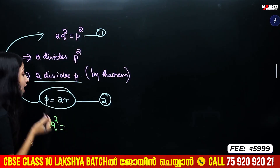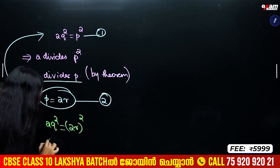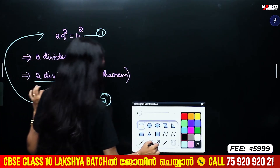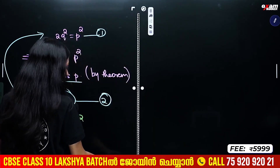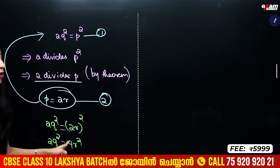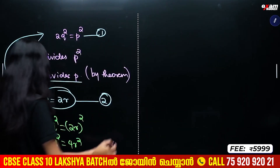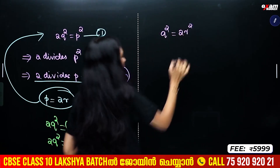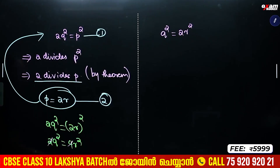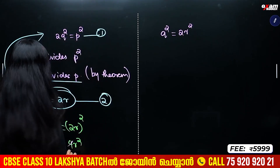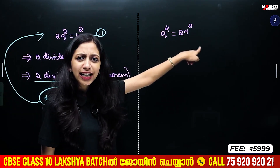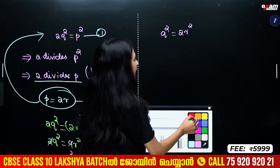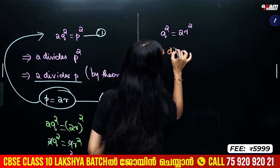So 2r squared gives us 2Q squared equals 4r squared. Dividing both sides, Q squared equals 2r squared. Again, Q squared is a multiple of 2, which implies that 2 divides Q squared.